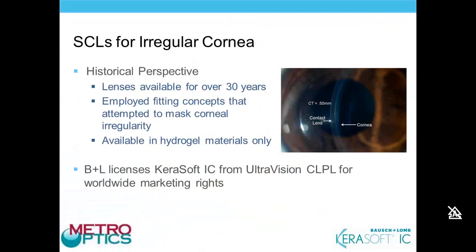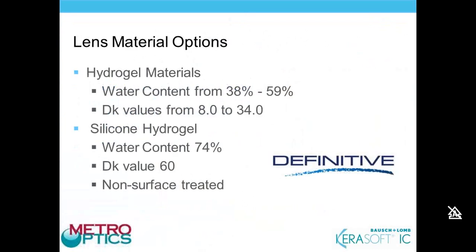Bausch & Lomb licensed the Kerasoft IC lens design from UltraVision in England back in 2011, so while it's relatively new, it has been around for a couple of years. The Kerasoft IC uses a lathe-able silicone hydrogel material called Definitive, which has a DK value of 60. Hydrogel materials range from 38–59% water content with DK values of 8–34. The silicone hydrogel material is a key feature that sets this lens apart for oxygen permeability.